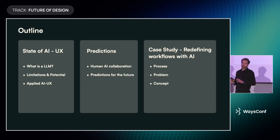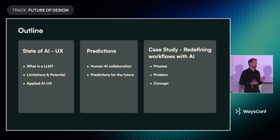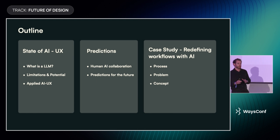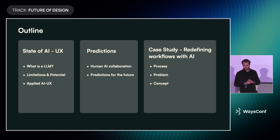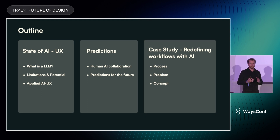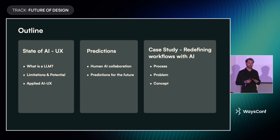The talk is structured in three parts. We will first talk about the state of AI UX to get a sense of what's currently happening and some important terms. Then we will see what the future might hold — I have some predictions derived from current developments. And in the final part, there is a case study with processes for planning your AI project, and I'll share how I use the exact framework myself.